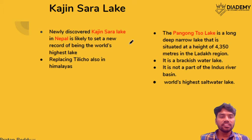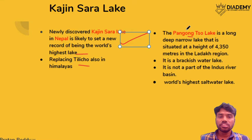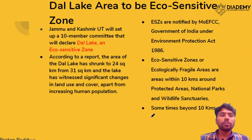Natural exploration via ships recently discovered a lake called Khajin Sara Lake in Nepal, setting a record as the world's highest lake, surpassing the earlier record holder Tilicho Lake in the Himalayan region. Another lake prominent in the news is Pangong Tso, due to the India-China standoff. It is situated at a height of 4,350 meters in the Ladakh region. It is a brackish water lake with some salt content, is not part of the Indus River water basin, and is the world's highest saltwater lake.